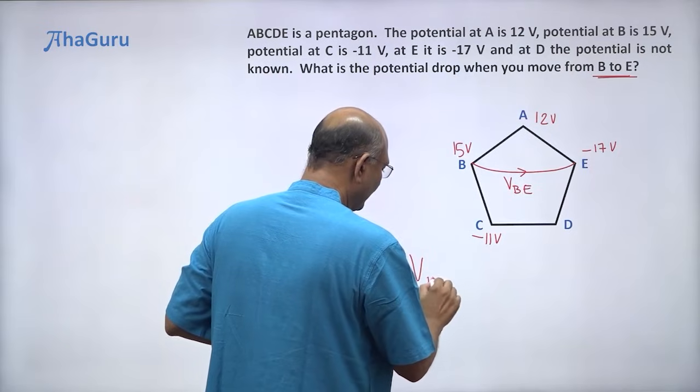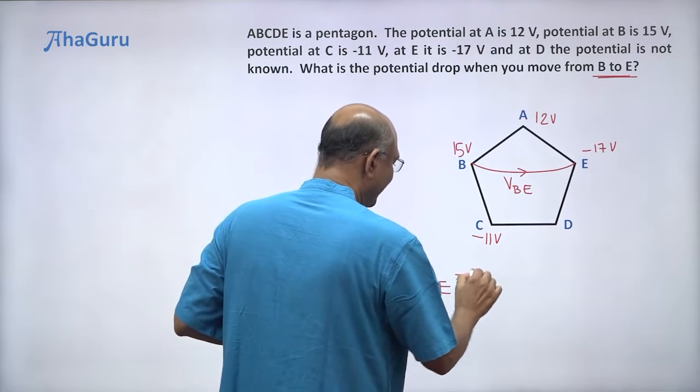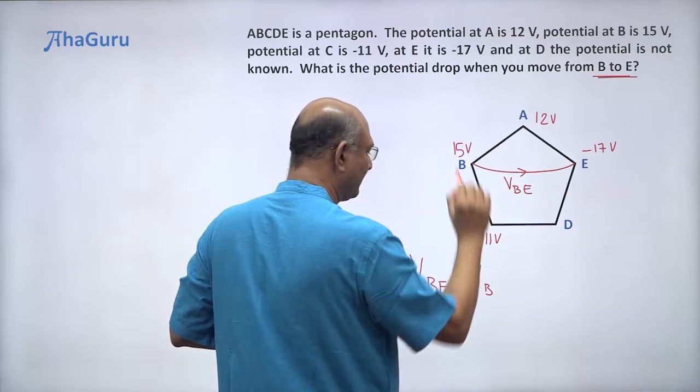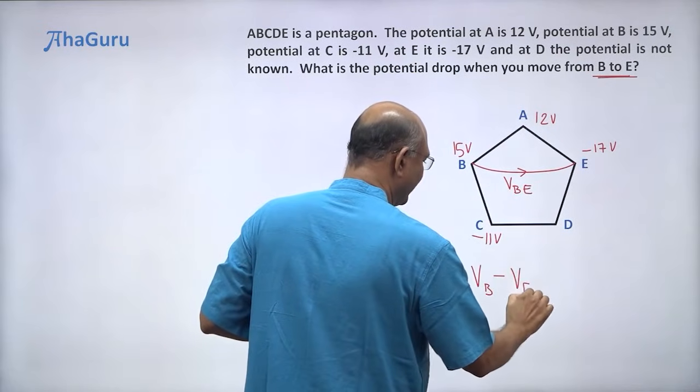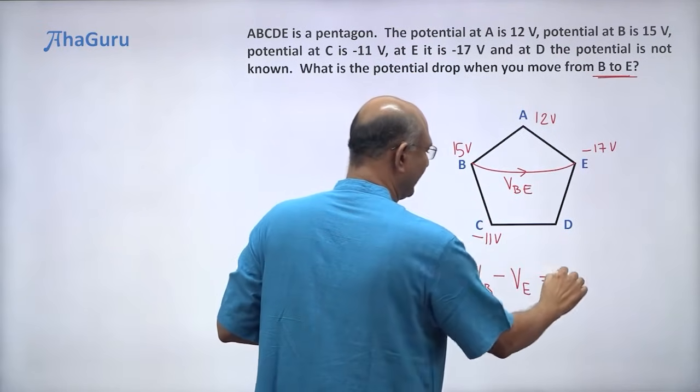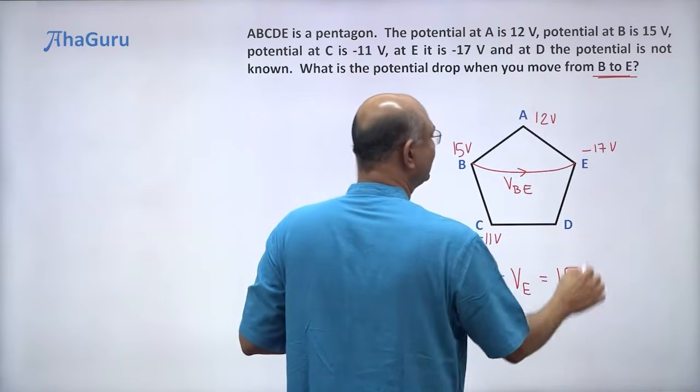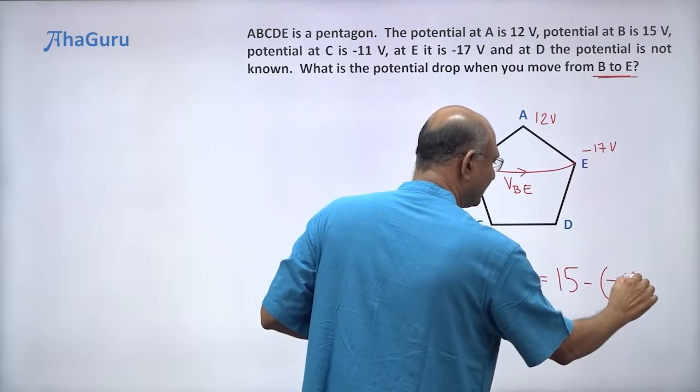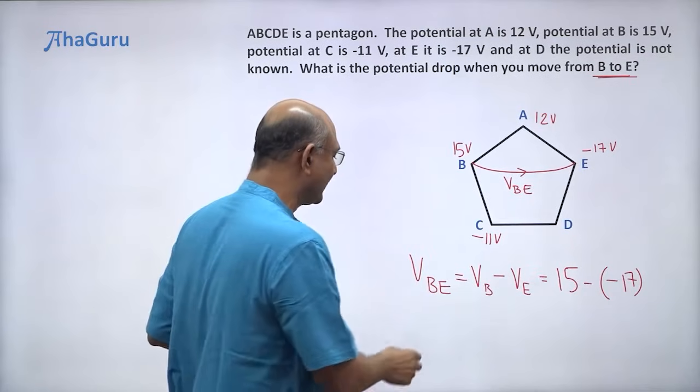Because VBE is just VB minus VE, right? Starting point is B. Ending point is E. So VBE is 15 minus of minus 17. So 15 plus 17, which is 32.